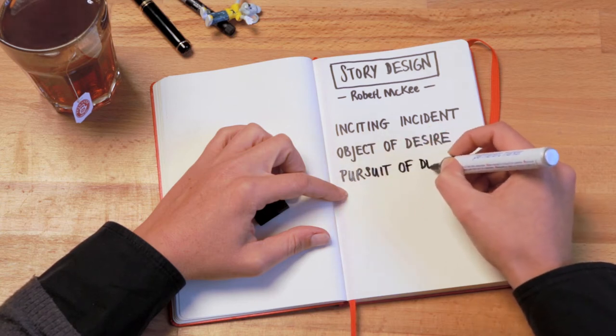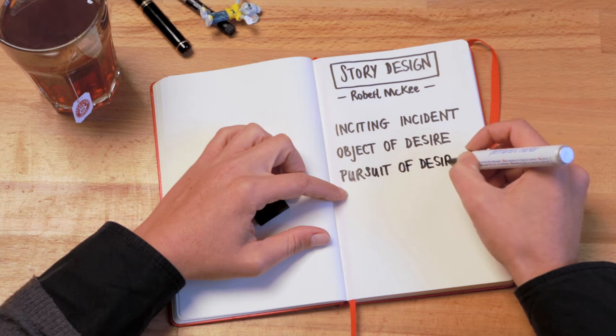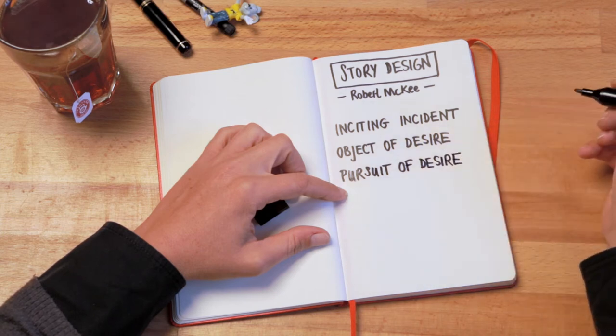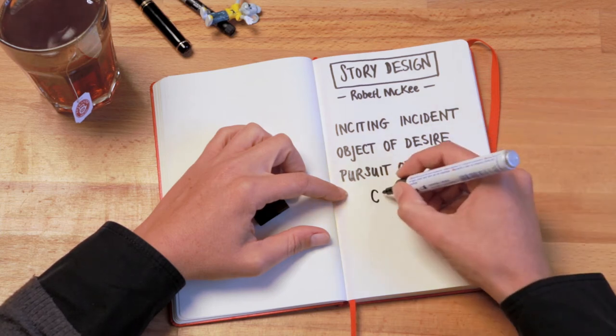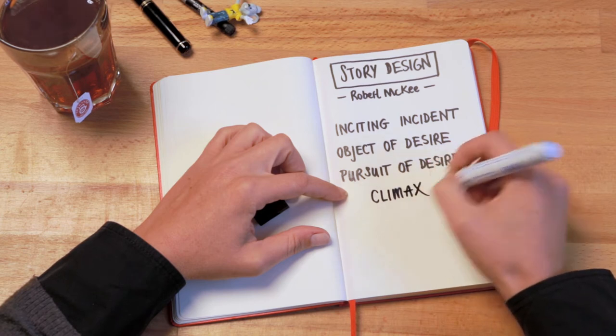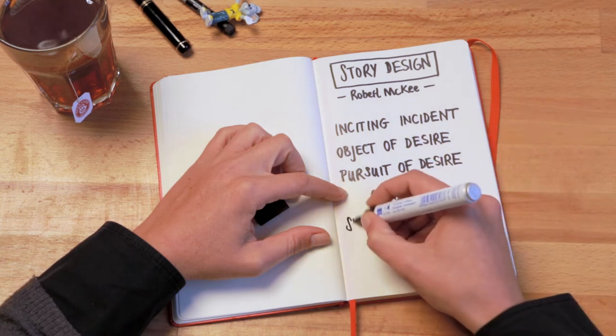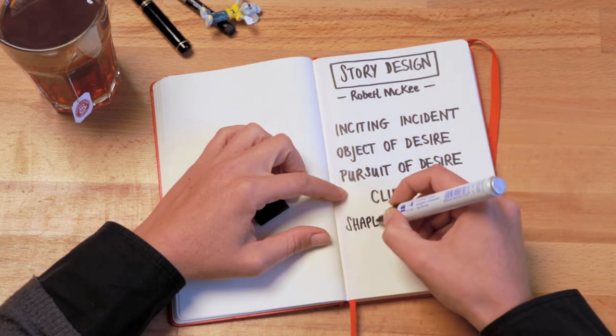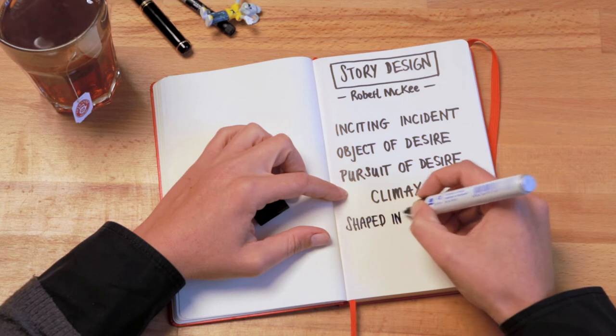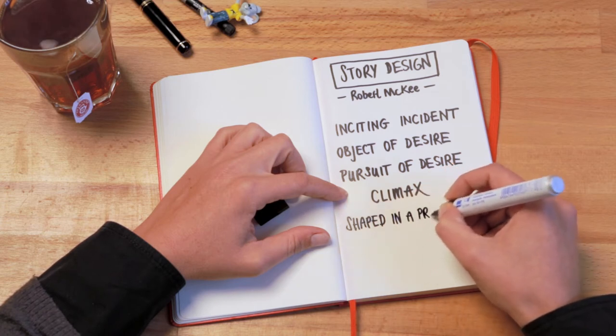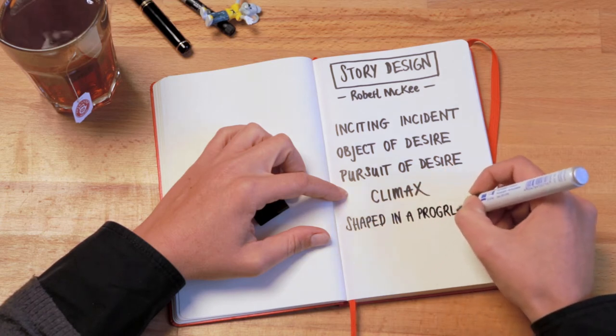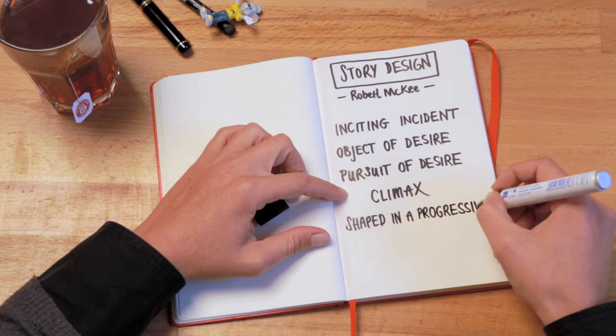The design of the story is built from that inciting incident, when life went out of balance, to the climax when balance is restored, for better or worse. Events must be shaped in a progressive way to hold the emotional and intellectual interest of the audience for two hours without interruption and deliver them a satisfying experience.